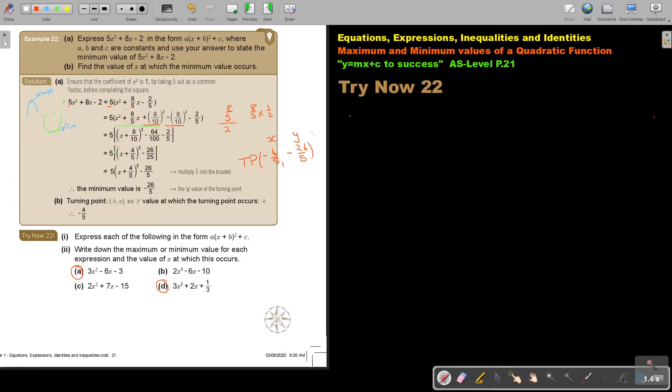Let's start. Number A. Express each of the following in this completing the square expression, and then you can write the minimum and the maximum and the value of x that it occurs. Let's start with A. If it's 3x squared minus 6x minus 3.